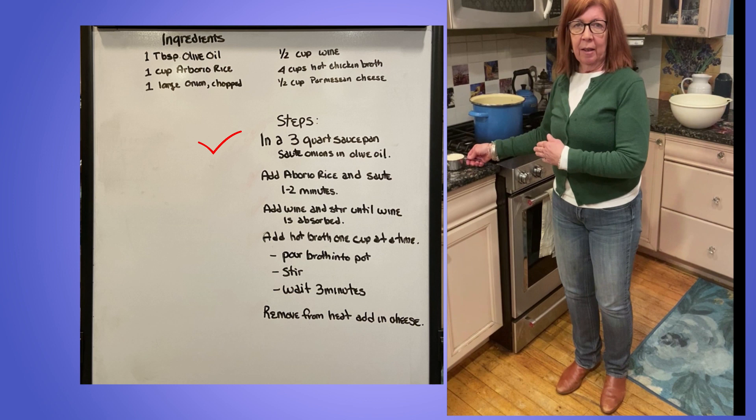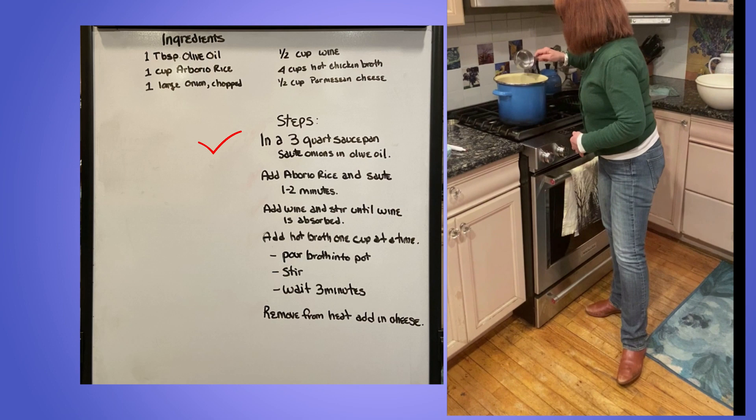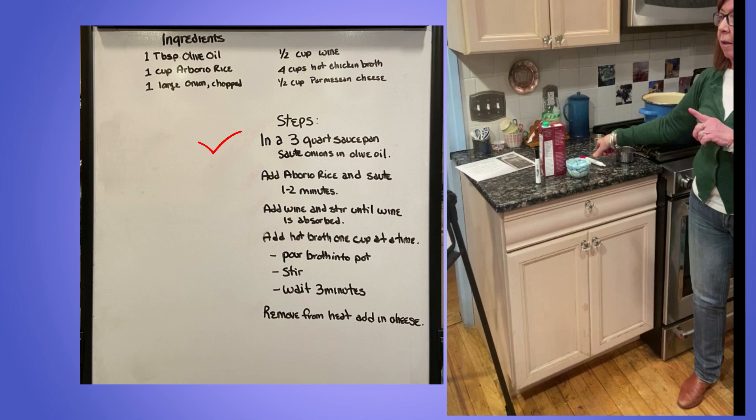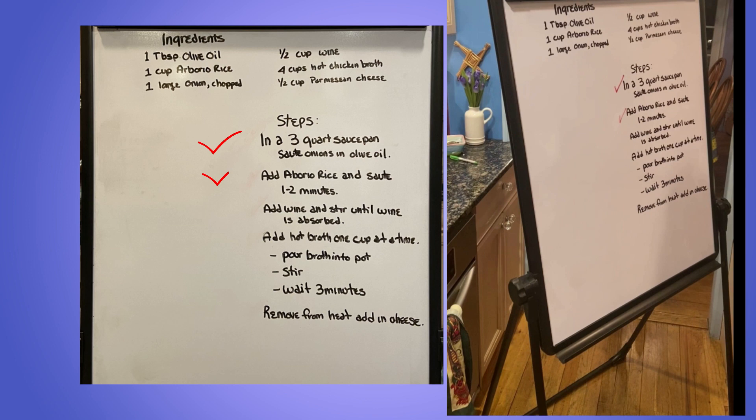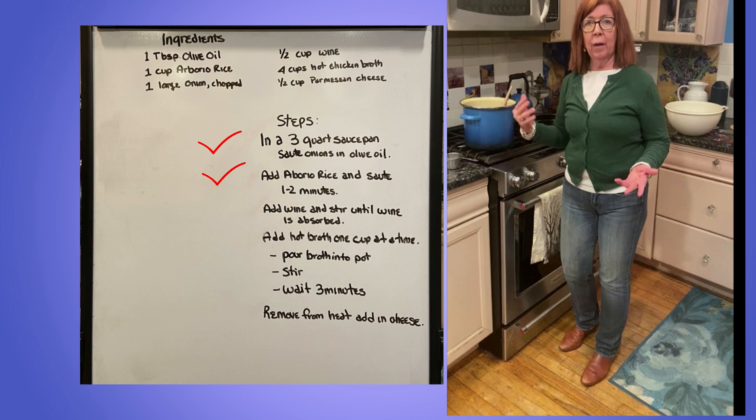I'm going to add the one cup of rice and sauté it for one to two minutes. The rice is now sautéed for two minutes. I'm going to add the wine.